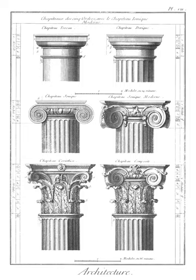Monotriglyph: interval of the intercolumniation of the Doric column, which is observed by the intervention of one triglyph only between the triglyphs which come over the axes of the columns. This is the usual arrangement, but in the Propylaia at Athens there are two triglyphs over the central intercolumniation, in order to give increased width to the roadway up which chariots and beasts of sacrifice ascended.